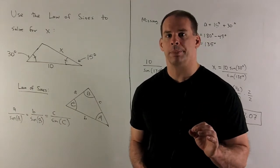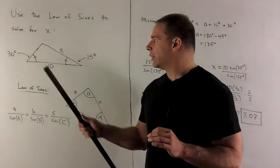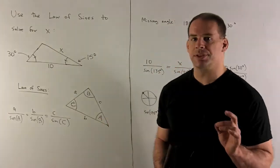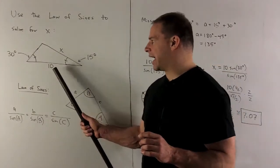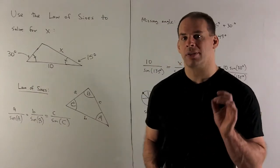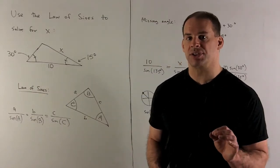Suppose we're given the following triangle. We have two angles, 30 degrees and 15 degrees. I'm given the lengths of two sides, X and 10. I want to use the Law of Sines to solve for X.